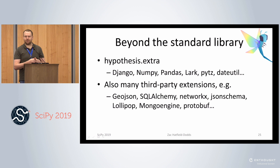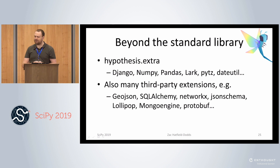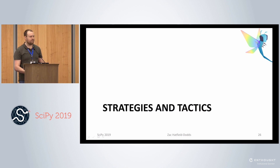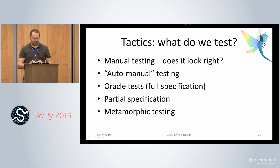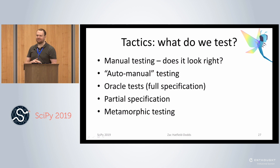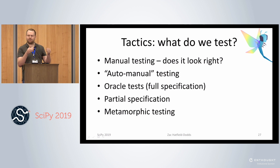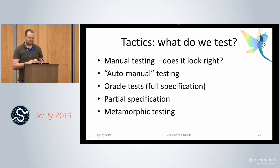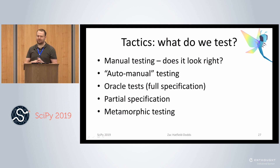Beyond the standard library, Hypothesis has support for NumPy, pandas, and a number of other packages, with even more third-party extensions on PyPI. There are a couple of different ways to write tests with Hypothesis. There's traditional manual testing where you write a script, get some output, and eyeball it. There's traditional automated testing where you specify an exact input and check for the expected output. And then there are property-based patterns: oracle tests or fully specified things, partial specification, and metamorphic testing.